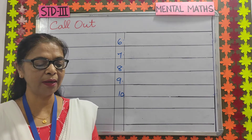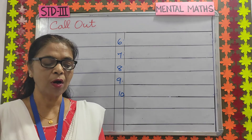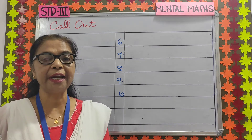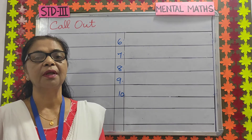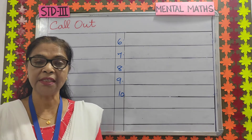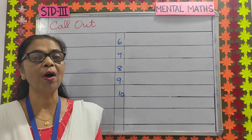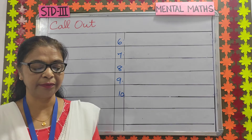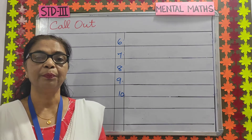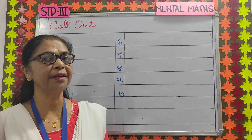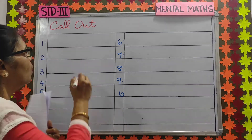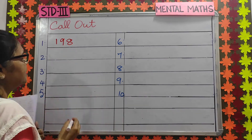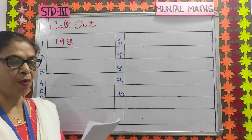Number 1: the predecessor of 199 is dash. The predecessor of 199 is 198.